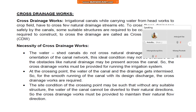The site condition of the crossing point may be such that without any suitable structure, the water of the canal cannot be diverted to the natural directions. So the cross drainage works must be provided to maintain their natural flow direction.